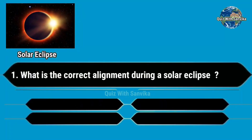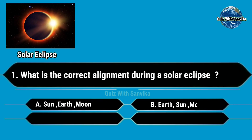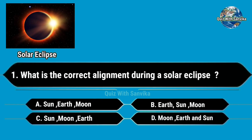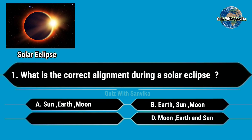What is the correct alignment during a solar eclipse? Options are A. Sun-Earth-Moon, B. Earth-Sun-Moon, C. Sun-Moon-Earth, and D. Moon-Earth-Sun. Answer is C. Sun-Moon-Earth.